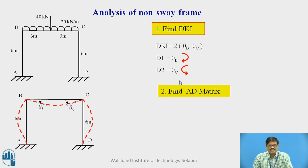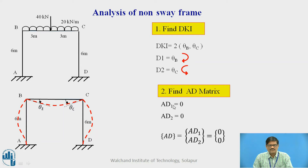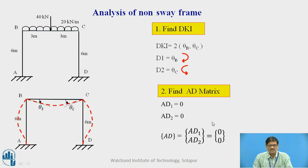We will now find the AD matrix, which represents the force in the direction of the redundants in the original structure. Since we have theta B and theta C as redundants and there is no external force in the direction of theta B and theta C in the structure, both values are 0.